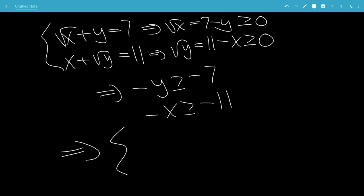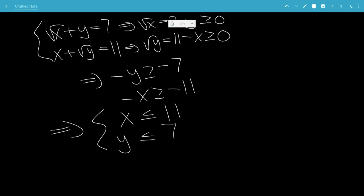So this also means that x has to be less than 11 or equal to 11, and y has to be less than or equal to 7. And this is less than or equal to 0 by square root definition.